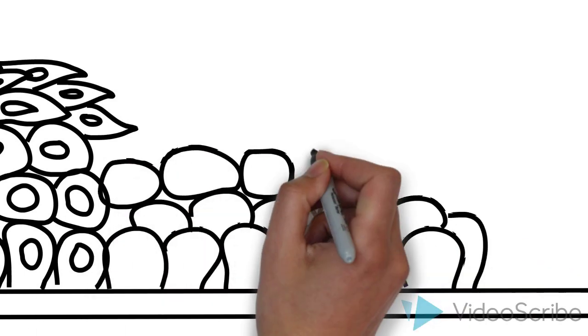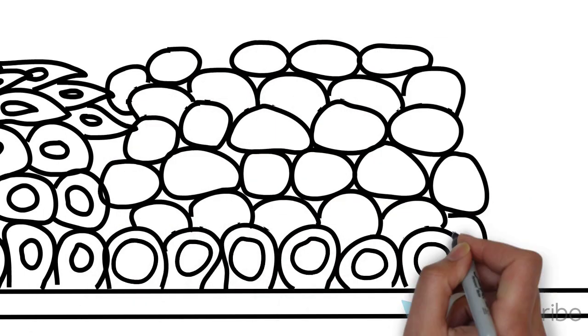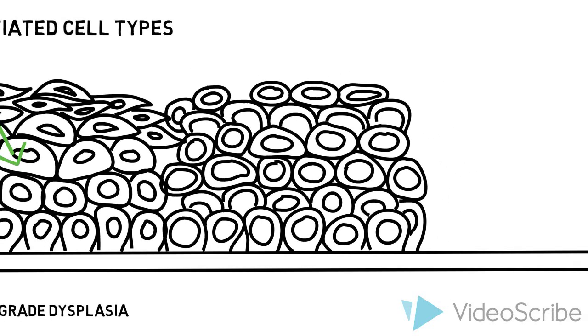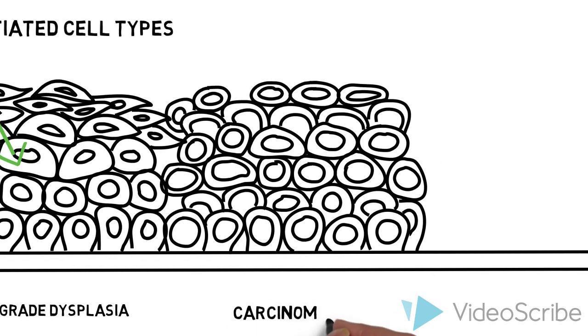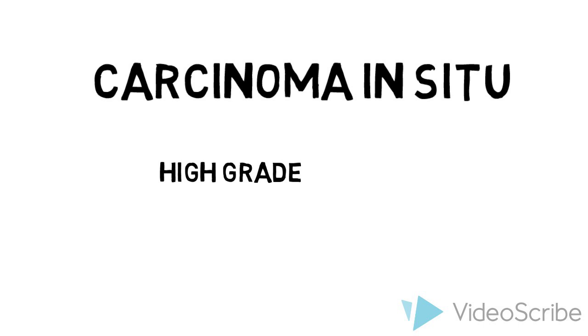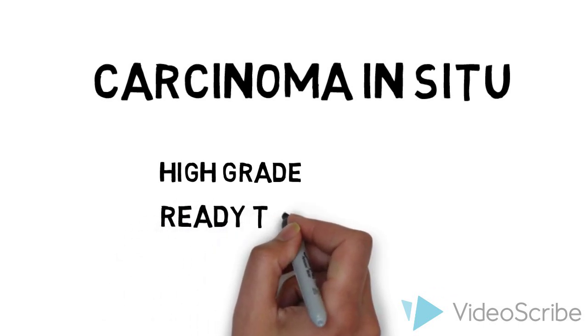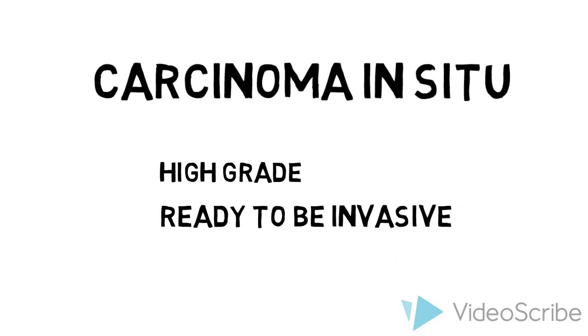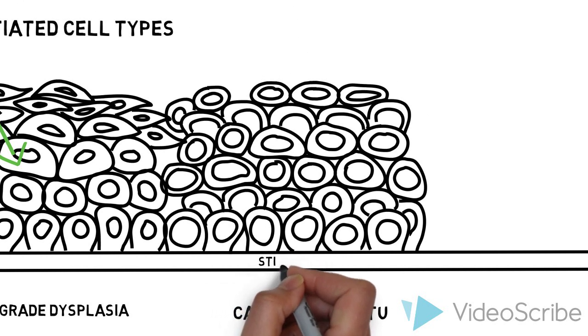Finally, once the dysplasia takes the entire height of the epithelium up to the basement membrane, this means that the cells are high-grade and ready to be invasive like a cancer, but they have not yet penetrated the basement membrane.